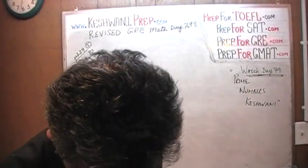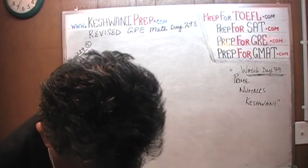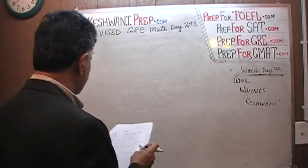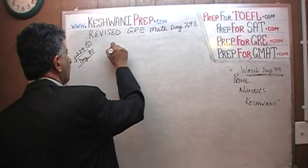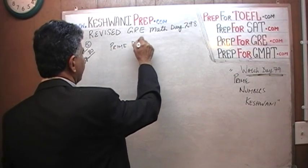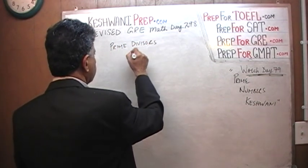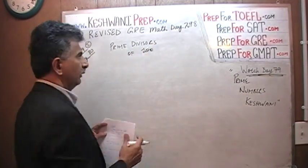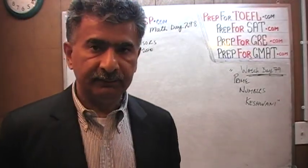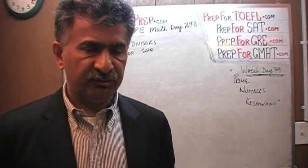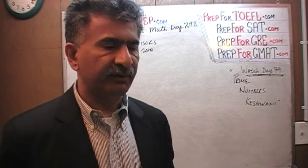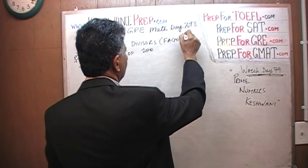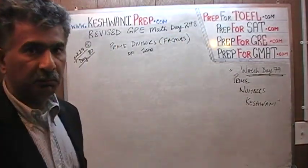Let's take a look at it. They are asking us for the prime divisors of 100. As we already learned in the last video, 'divisor' is just a very fancy, very academic, very annoying way of saying 'factors.' So we are essentially looking for the prime factors of 100.